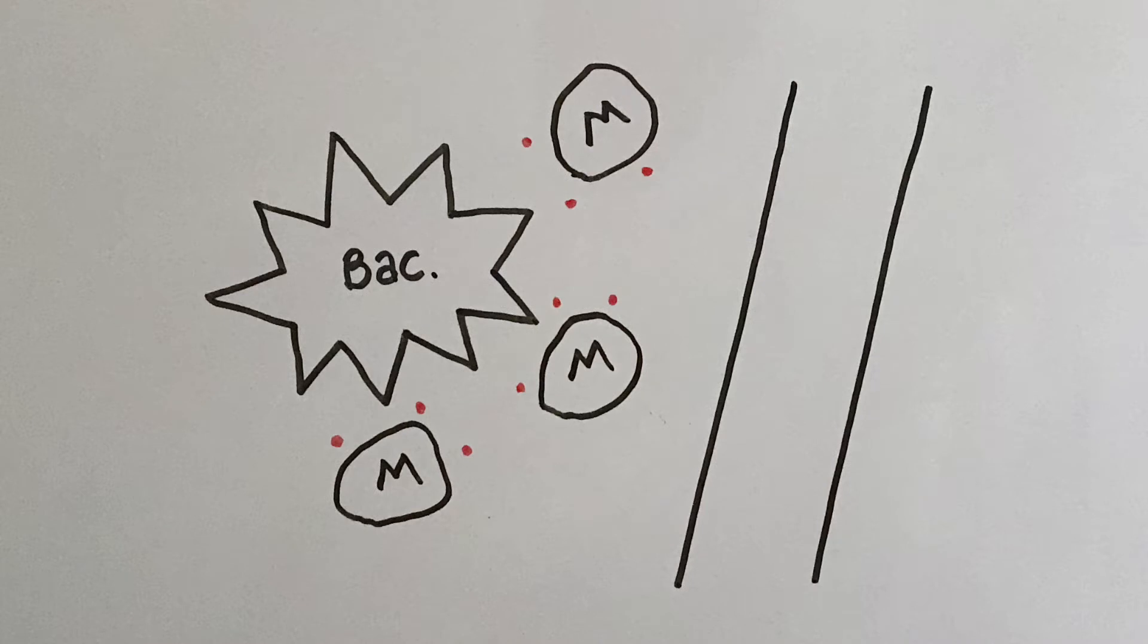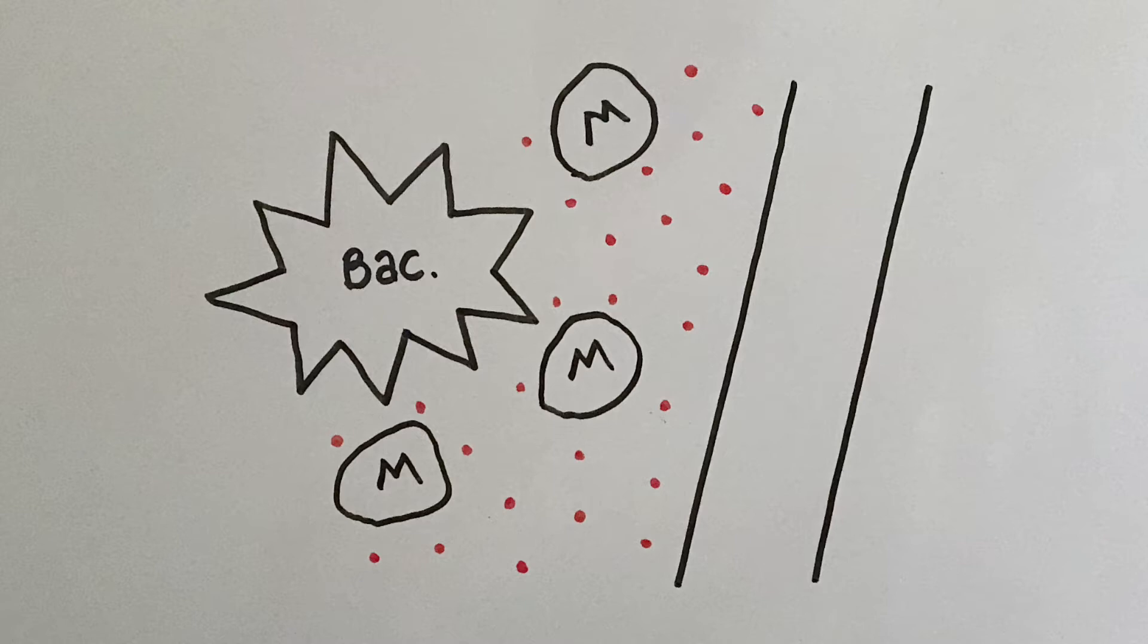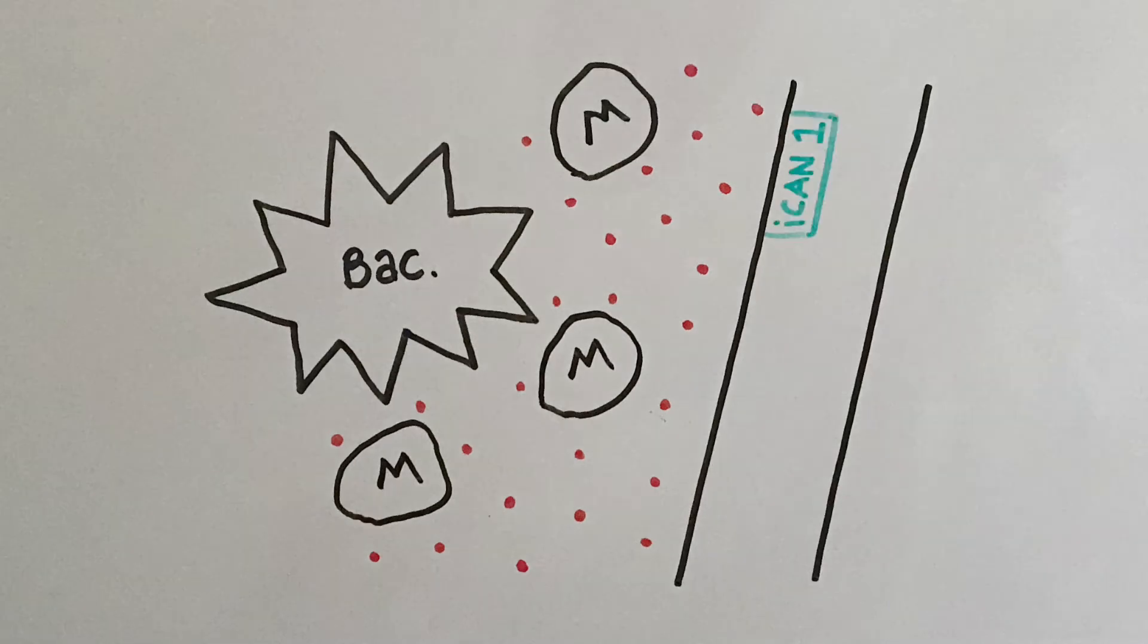Your macrophages release several pro-inflammatory cytokines such as interleukin 1 beta, interleukin 6, and TNF alpha. These cytokines signal to the endothelium to become active, and the endothelial cells then start to express adhesion molecules such as ICAM-1.